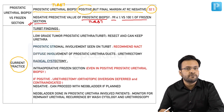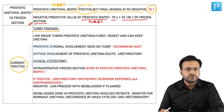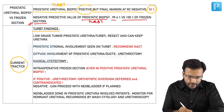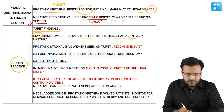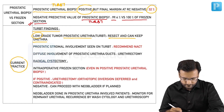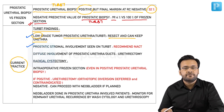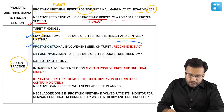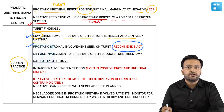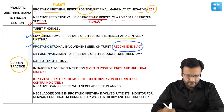Current practice: if a clinician evaluates the urethra at the time of TURBT — suspecting involvement due to bladder neck involvement, multifocality, or presence of CIS — and finds a low-grade tumor in the prostatic urethra, they resect the tumor and can retain that urethra. If prostatic stromal involvement is seen, it carries a poor prognosis as it is associated with a high incidence of nodal positivity.